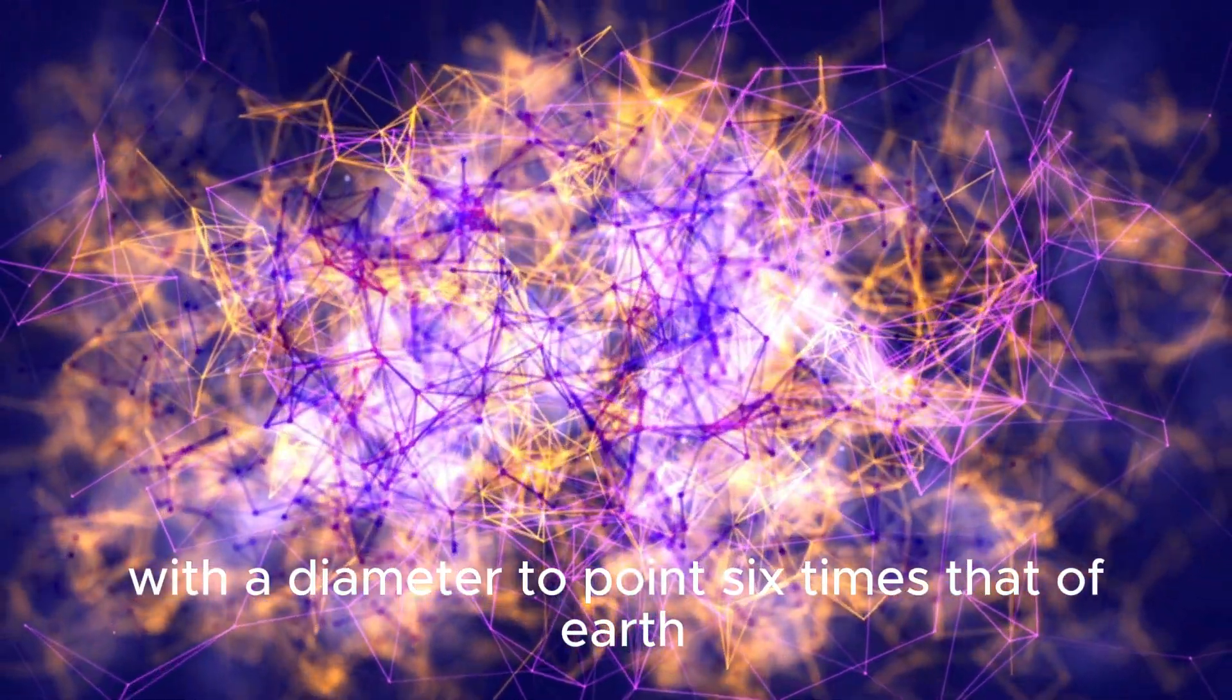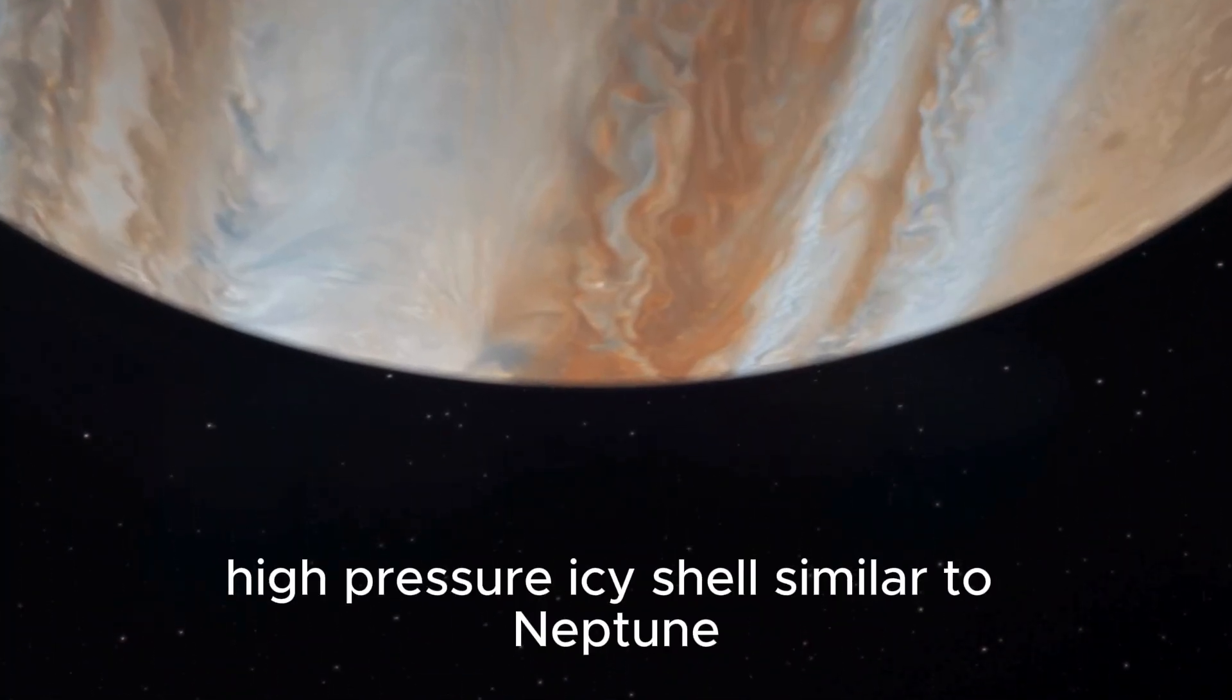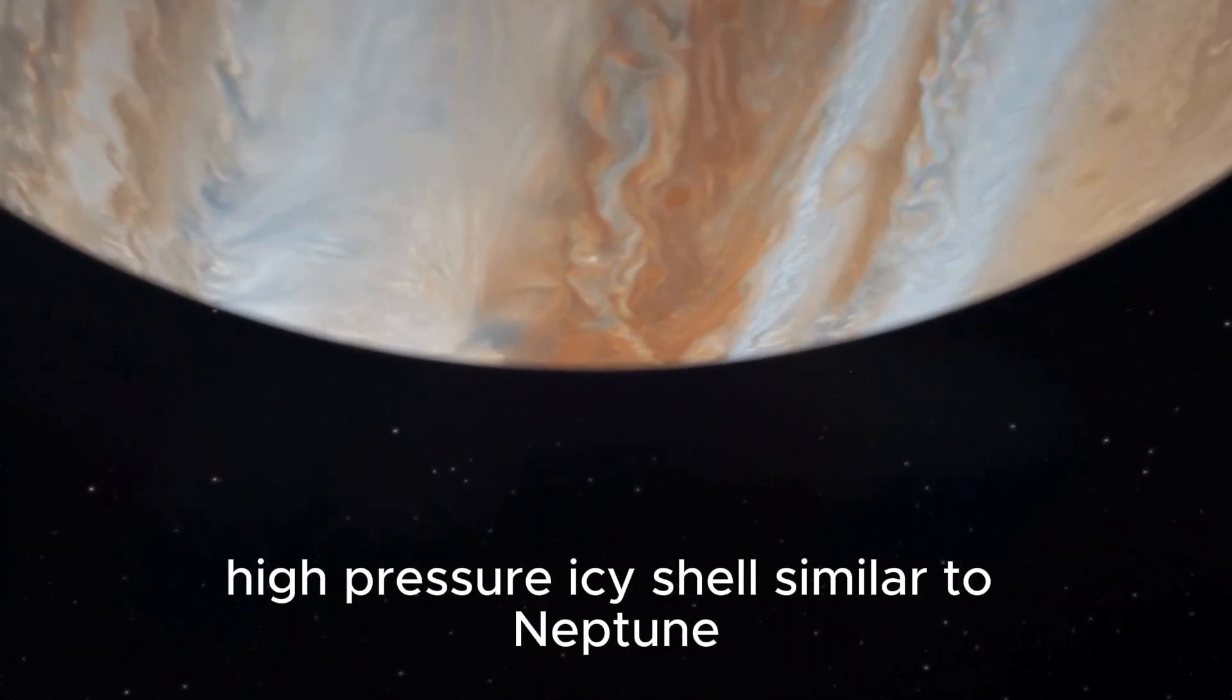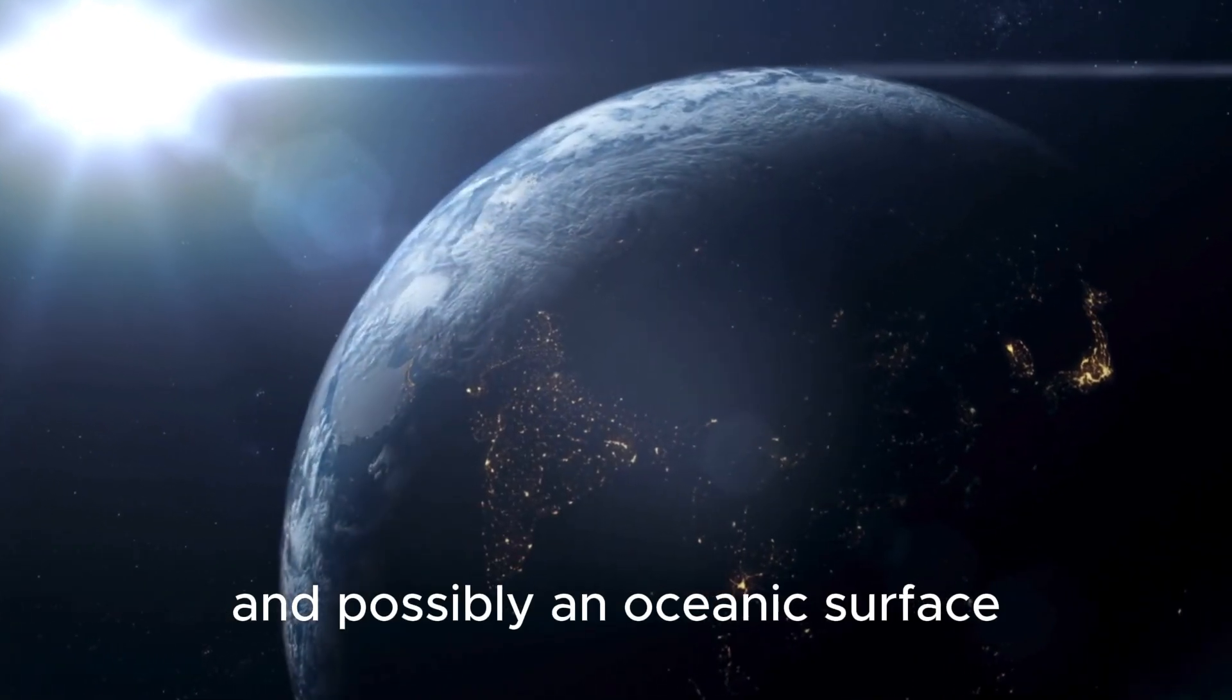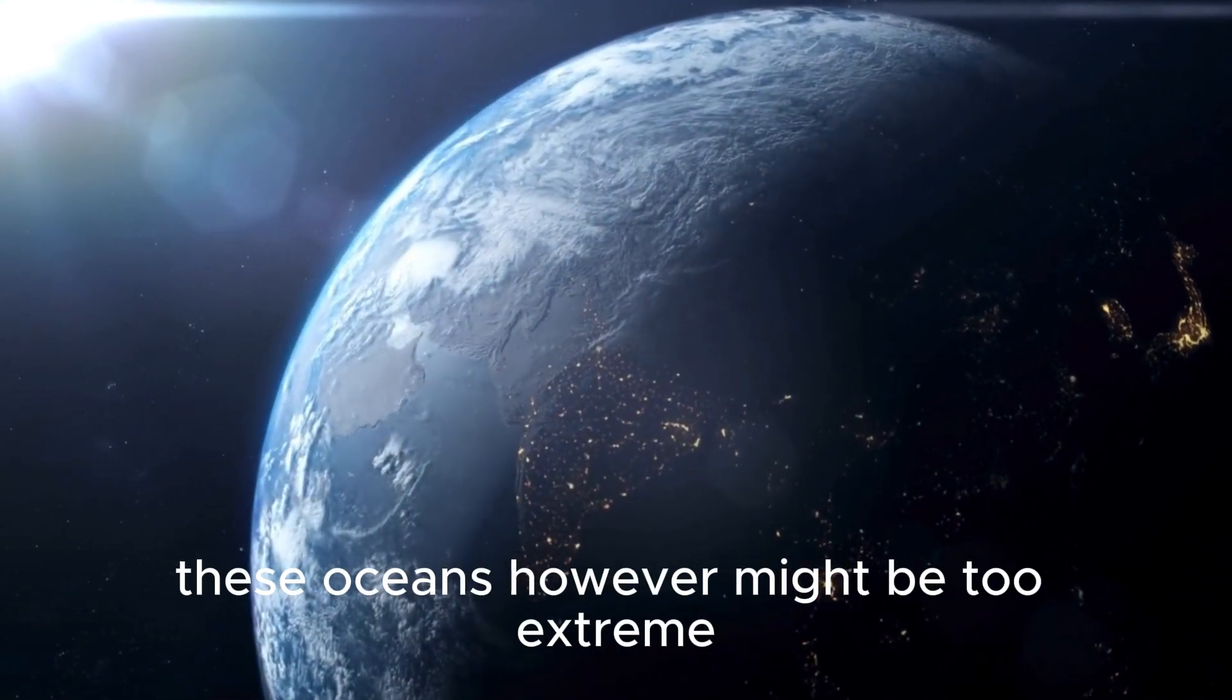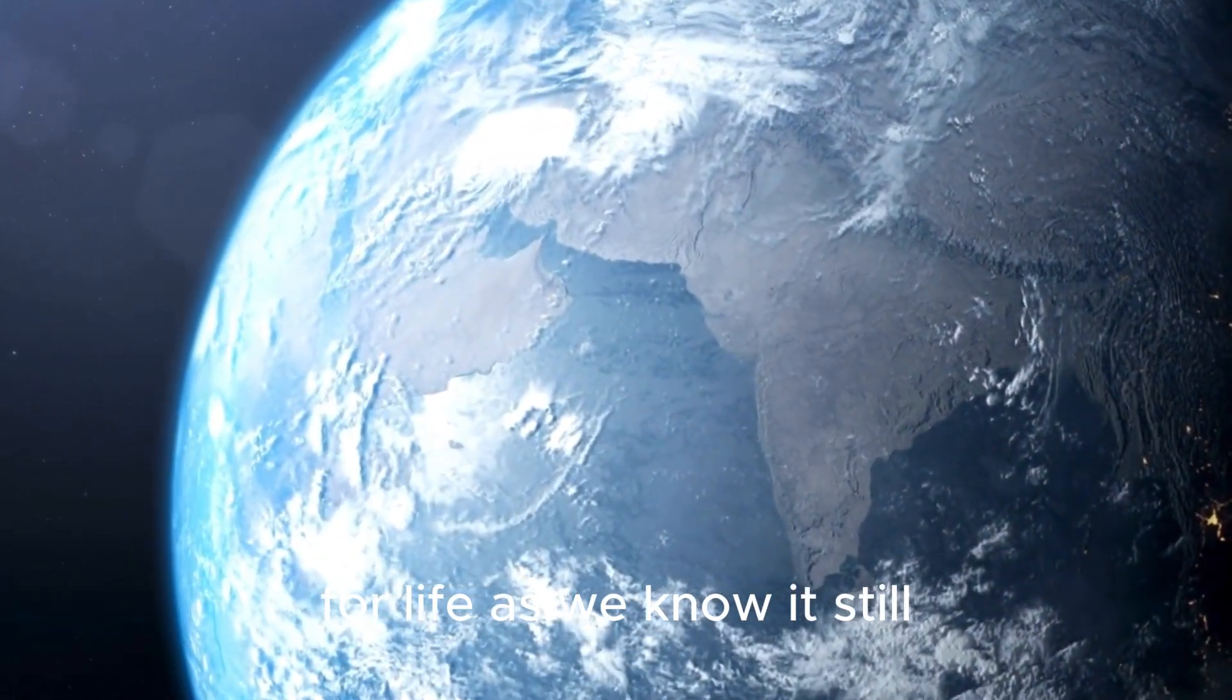With a diameter 2.6 times that of Earth, the planet is likely enveloped by a thick, high-pressure icy shell similar to Neptune, topped by a hydrogen-rich atmosphere and possibly an oceanic surface. These oceans, however, might be too extreme, either in pressure or chemical composition, for life as we know it.